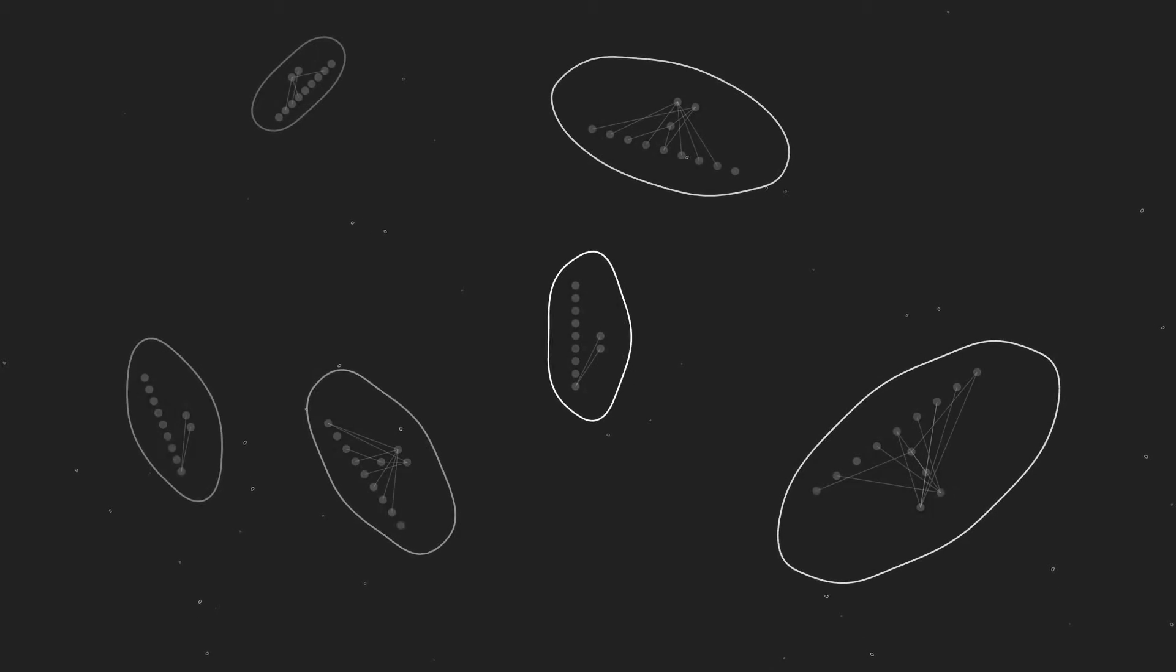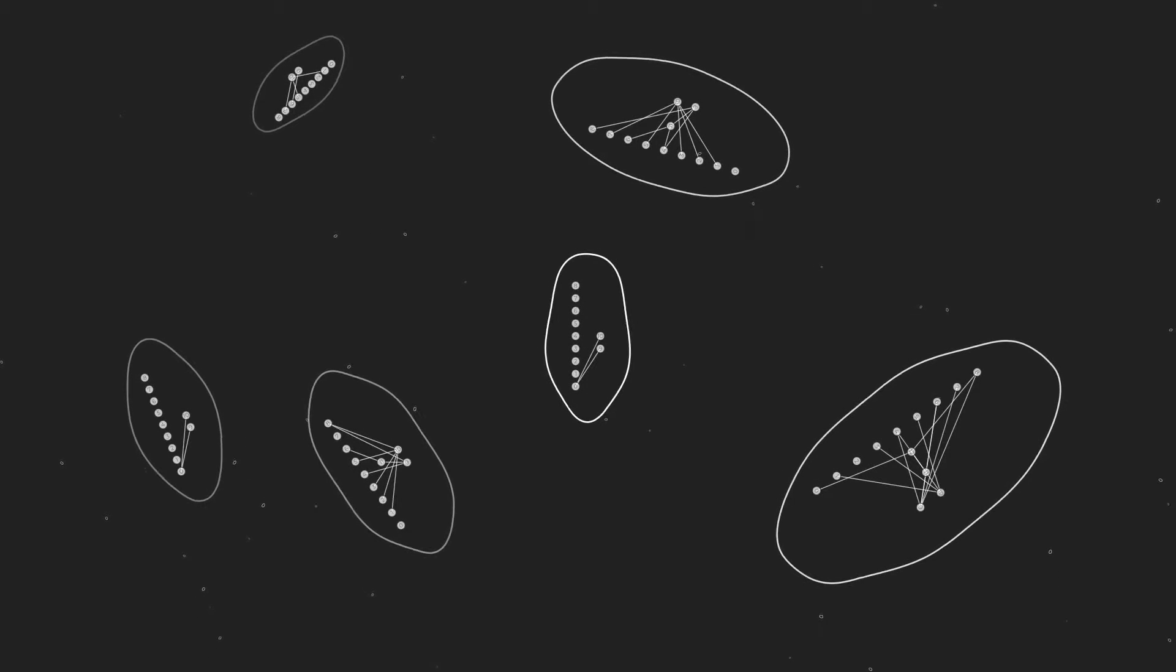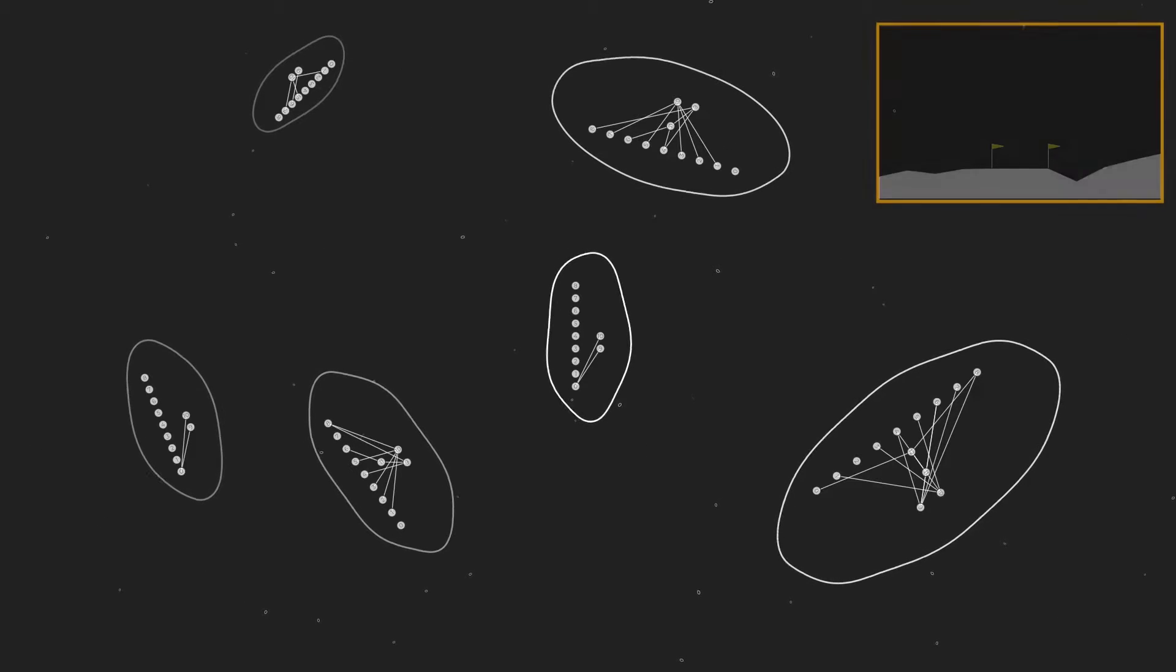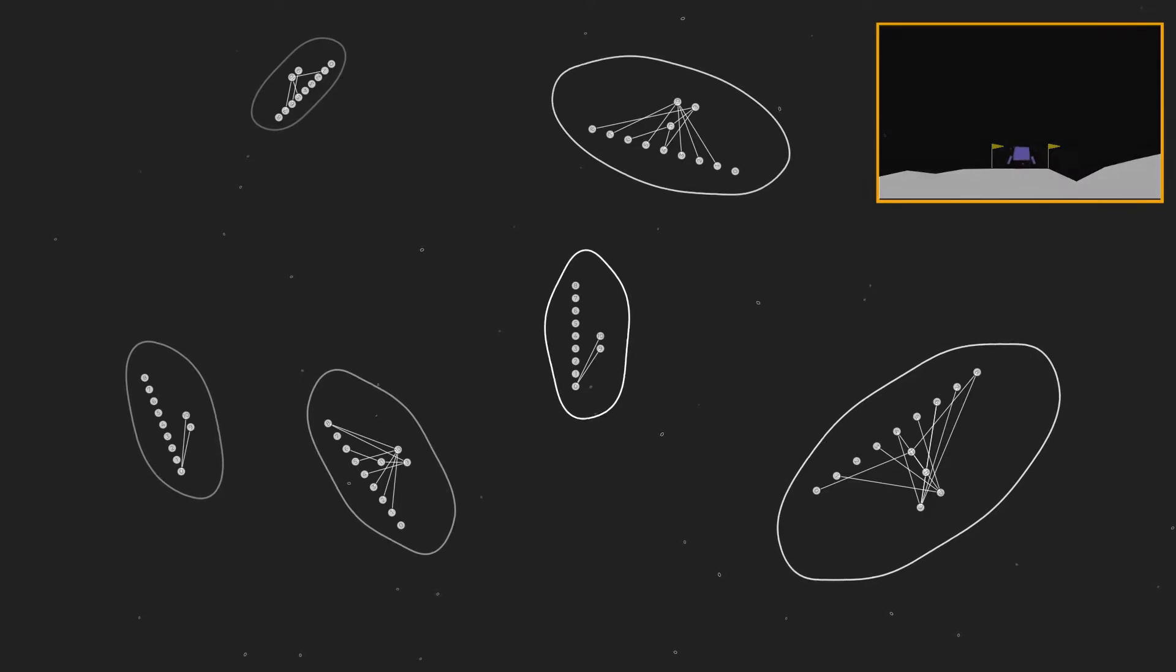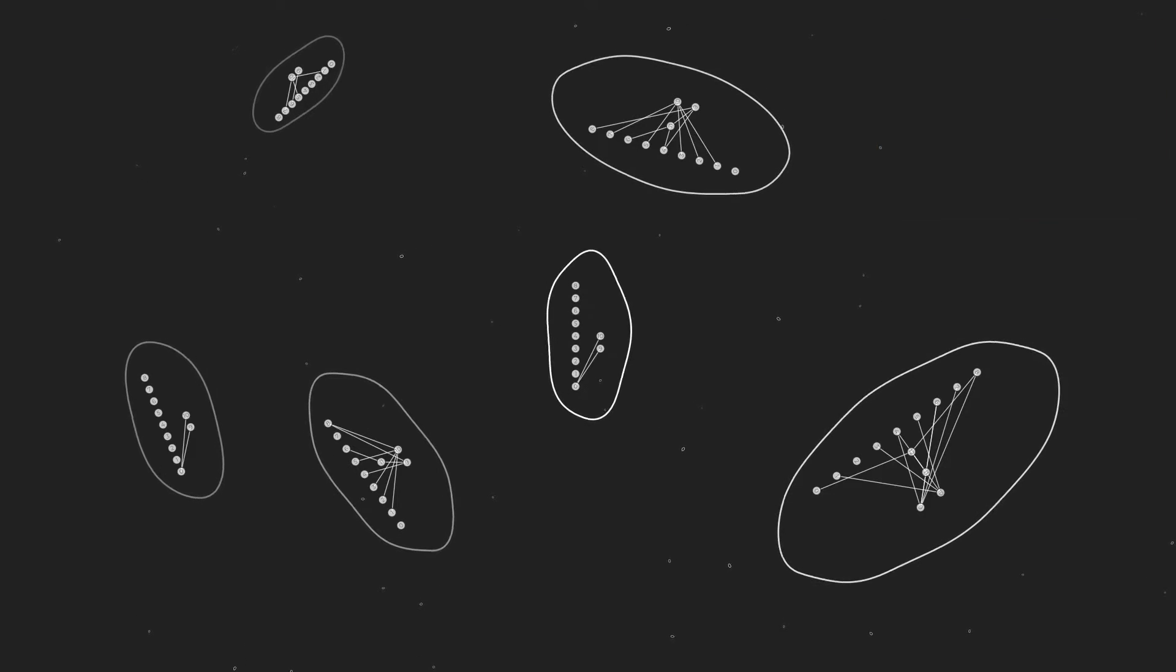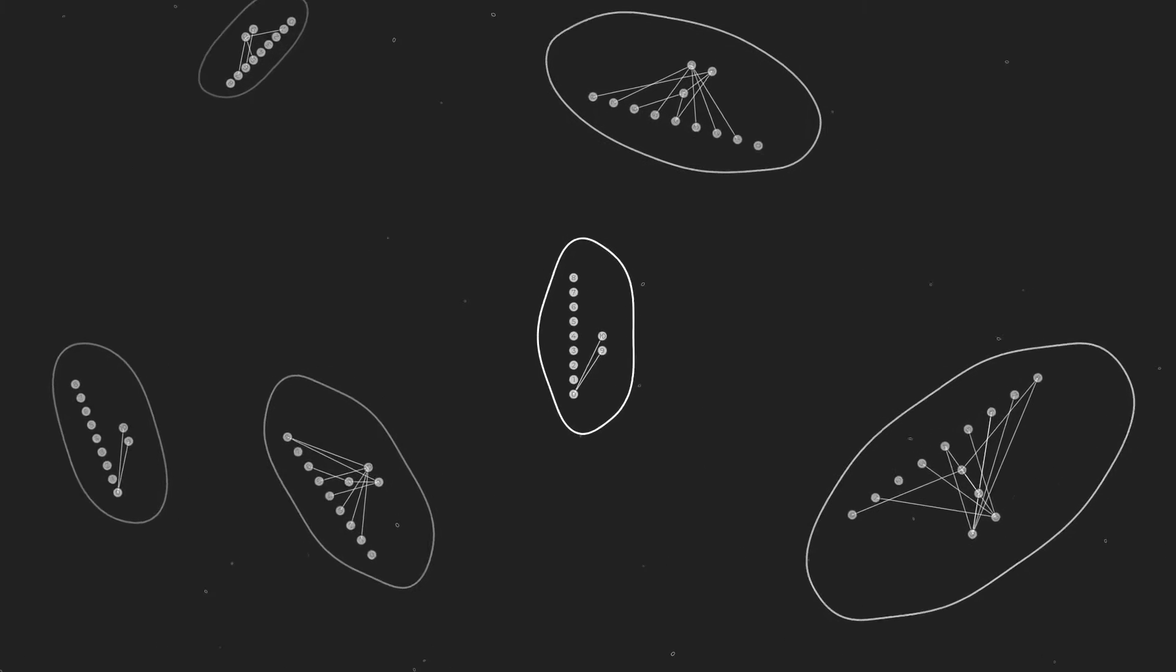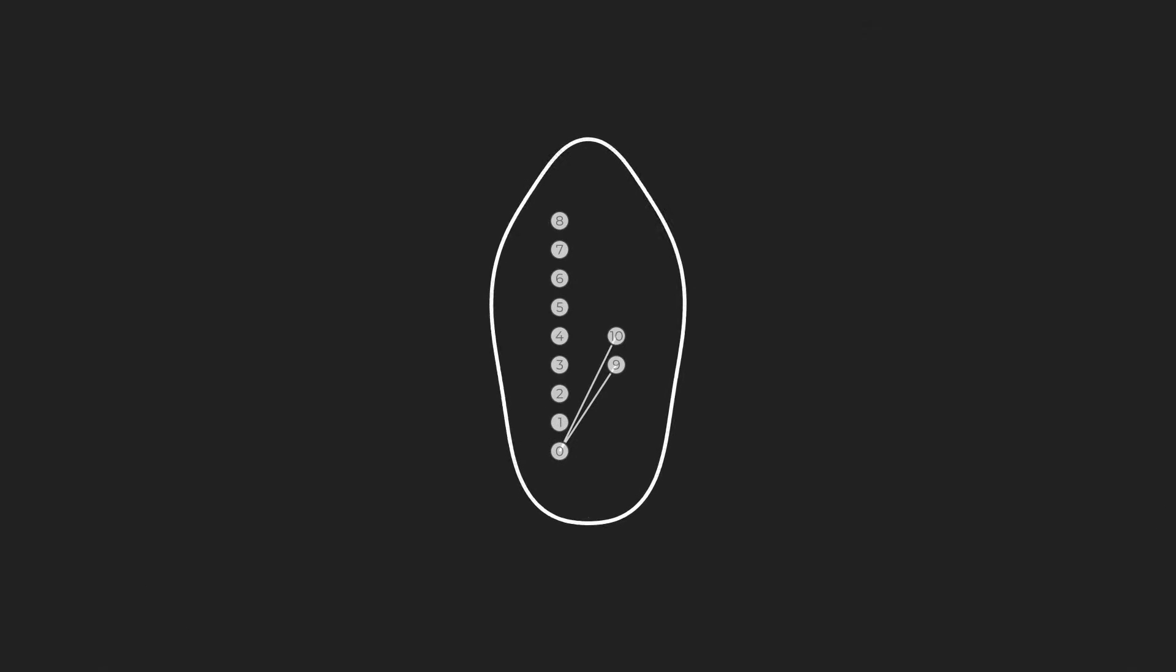The NEAT algorithm aims to mimic this process in order to train artificial neural networks to solve specific problems. In our case, the networks will learn to play Lunar Lander, an old arcade game where the objective is to land a rocket on the surface of the Moon. But how exactly does it work? Let's dive in and find out.